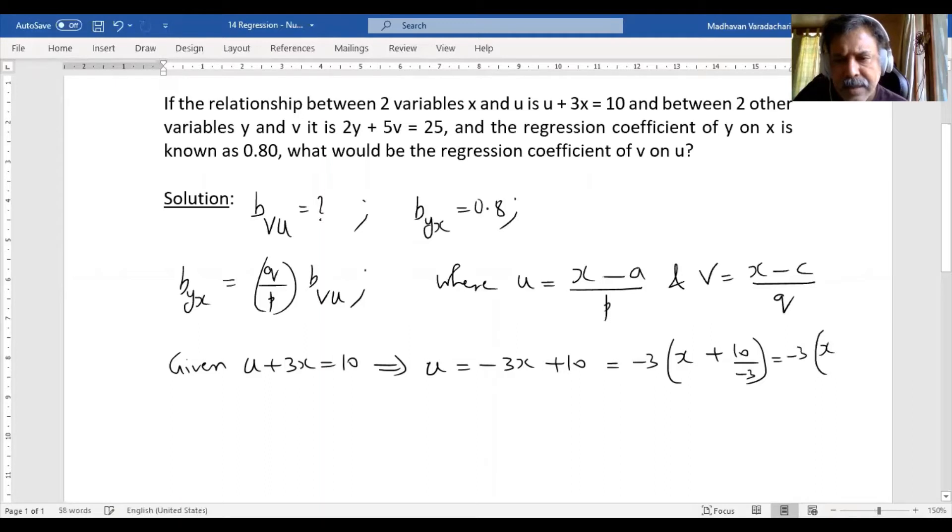But I want this minus 3 to go to the denominator. How do I do it? I can simply take the reciprocal of that number to the denominator, means this will become minus 1 by 3. Therefore, it implies that p value is minus 1 by 3.